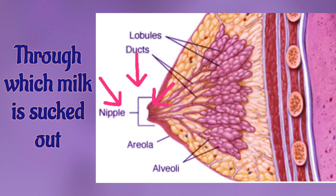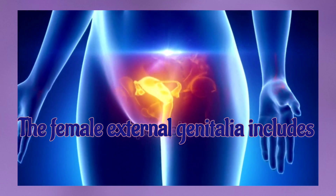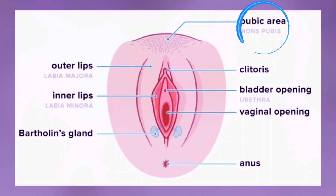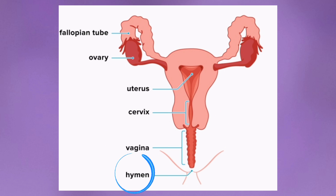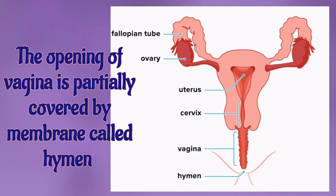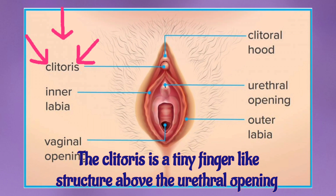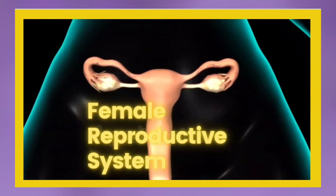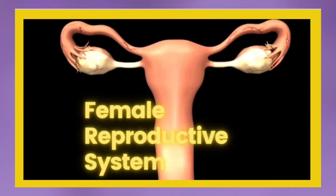The mammary ducts join to form a wider mammary ampulla, which is connected to the lactiferous duct through which milk is sucked out. The female external genitalia include mons pubis, labia majora, labia minora, hymen, and clitoris. The opening of the vagina is partially covered by a membrane called the hymen. The clitoris is a tiny finger-like structure above the urethral opening.